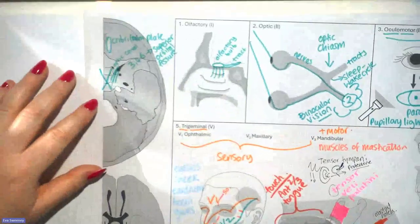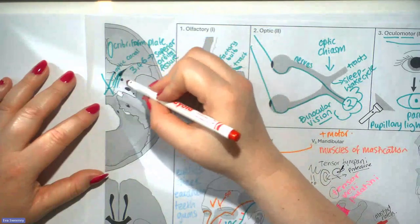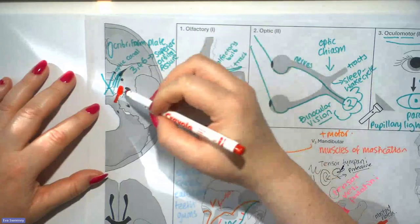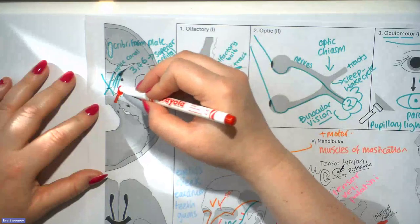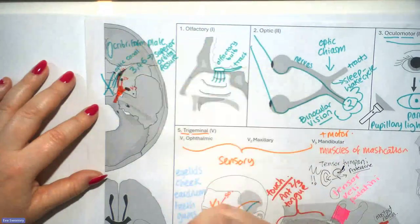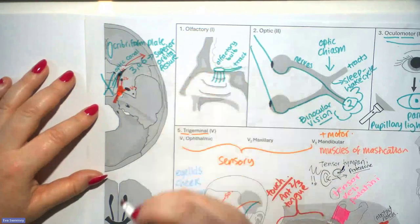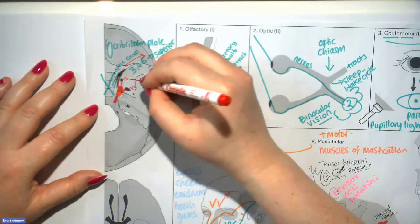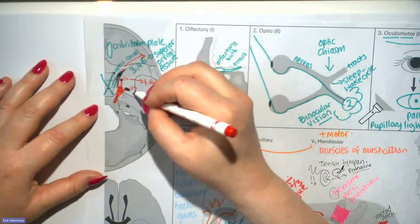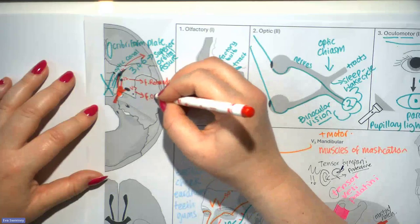Before moving on, we add the trigeminal nerve to the picture. The trigeminal sits in the middle cranial fossa and has a ganglion — a little swelling where all the cell bodies are located — with V1, V2, and V3 coming off it. V1 passes through the superior orbital fissure. The V2 division goes through foramen rotundum. V3 passes through foramen ovale.